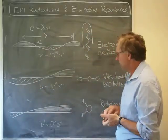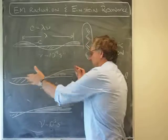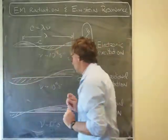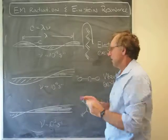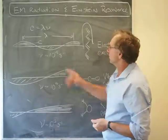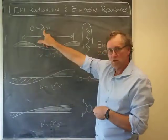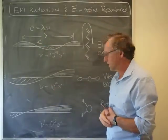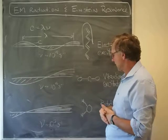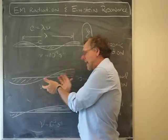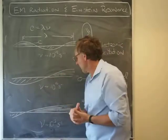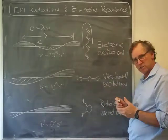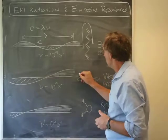There's another way that this could happen, and I've drawn this light now with a bigger wavelength. Because the wavelength is longer, according to this, the frequency must be slower, and indeed it's about in this case 10 to 14 cycles per second. That kind of light can be in Einstein resonance with a different type of motion—vibrational excitation.